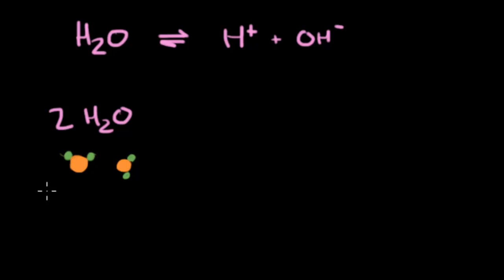If one acts as a Bronsted-Lowry acid, so we'll say this one is going to act as a Bronsted-Lowry acid, and the other one acts as a Bronsted-Lowry base, that means that one is going to be donating a hydrogen, the acid one, and the other one is going to be accepting that hydrogen, the base one.